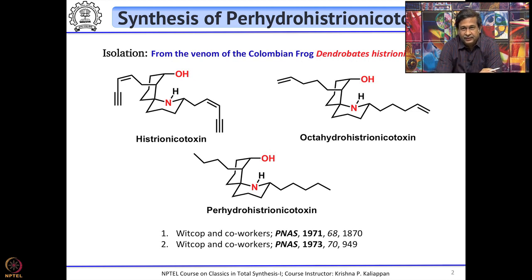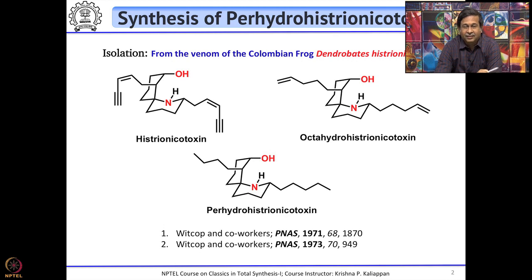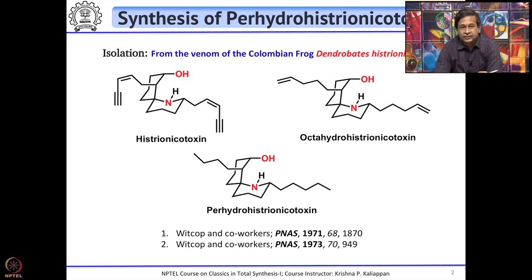The second natural product is the one where the triple bond is reduced to a double bond, while the double bond is fully reduced — this is called octahydroestrionicotoxin. The third natural product is the fully reduced natural product called perhydroestrionicotoxin, where the side chain is completely reduced.